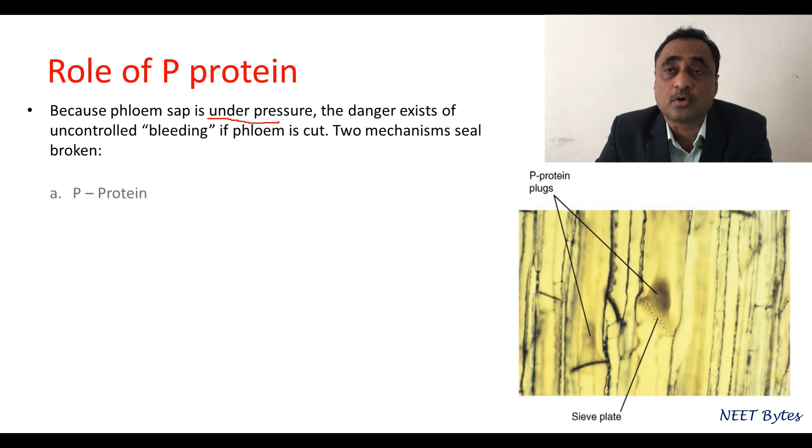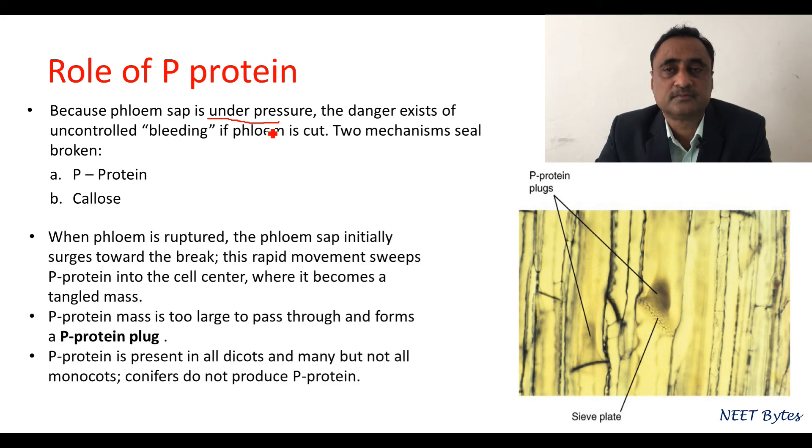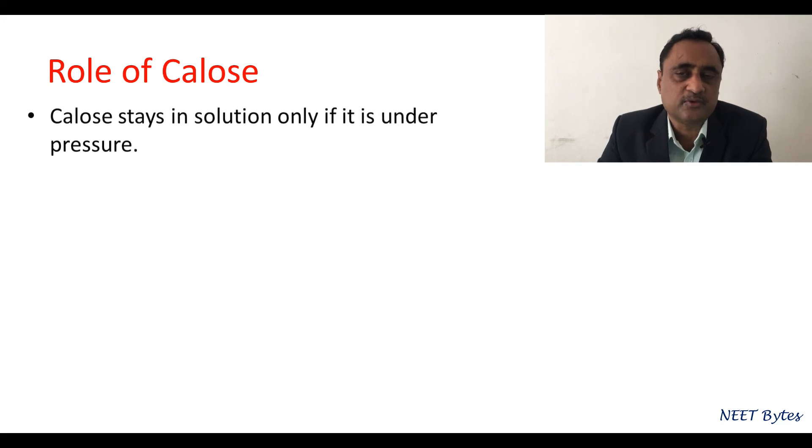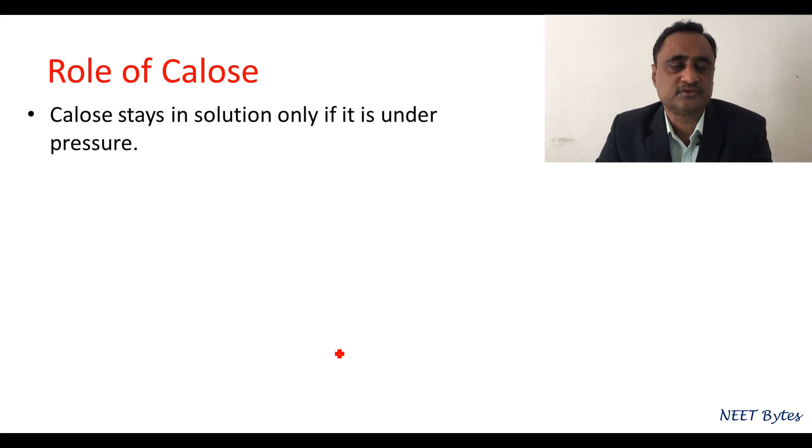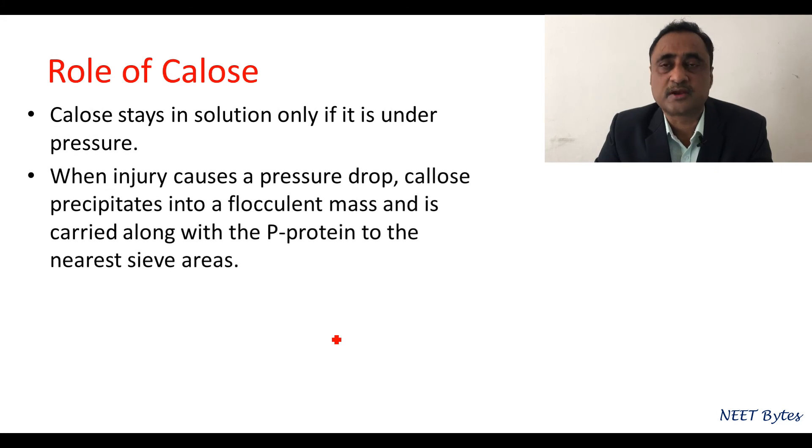But not all monocots, and in conifers, P-protein is absent. But in those plants where P-protein is not there, we have another substance called callose. Callose stays in solution only if it is under pressure. When a cut happens, the pressure decreases. So callose precipitates and along with the mass, it goes to the area where bleeding is happening. Along with or without P-protein, they cover the entire area, forming a callose plug and preventing leakage.